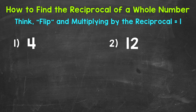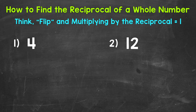Let's jump into our examples, starting with number 1, where we have 4. And we're going to find the reciprocal. So the first thing that we need to do is to rewrite this whole number in fractional form. All we need to do is put it over 1. So we can put 4 over 1 to put it in fractional form.